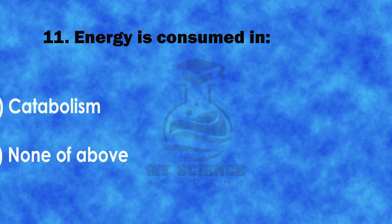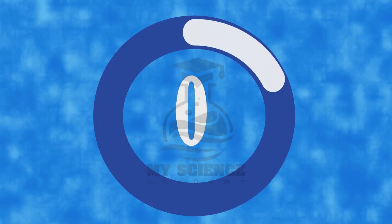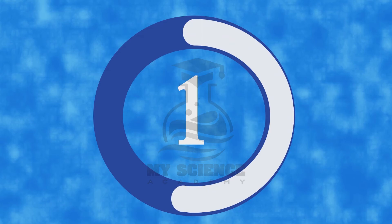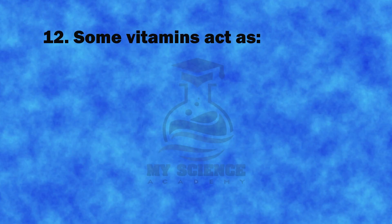Question 11: Energy is consumed in: A. Anabolism, B. Metabolism, C. Catabolism, or D. None of above. The correct answer is A. Anabolism.